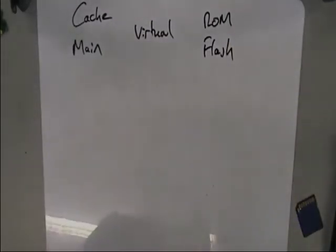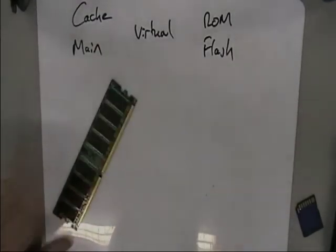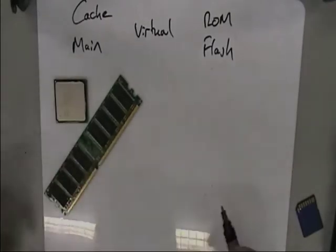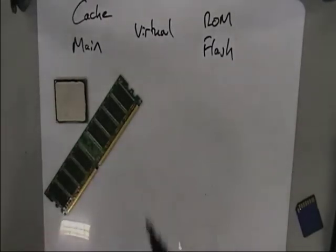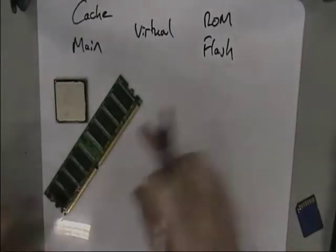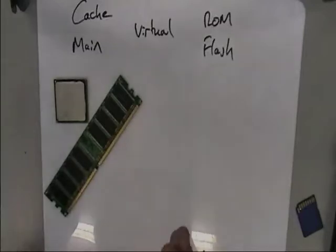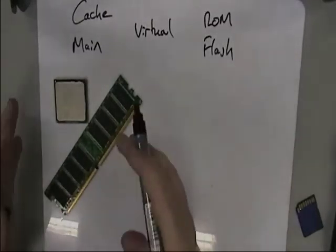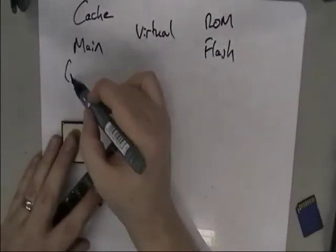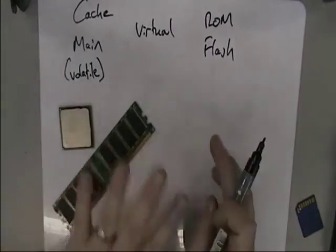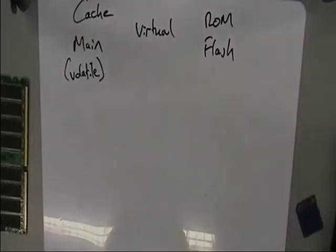Your cache and your main memory are really good at storing data temporarily and they're really quick with no moving parts, so they can't wear out in the traditional sense. But when you turn the power off, you lose whatever's in there. So these two things are volatile — by volatile, what we mean is when you turn the power off, the data gets wiped, gone, finished with.